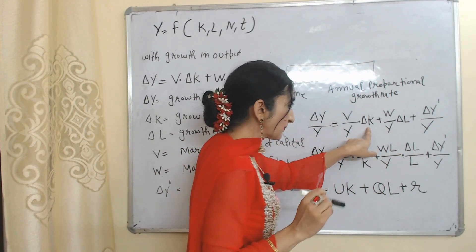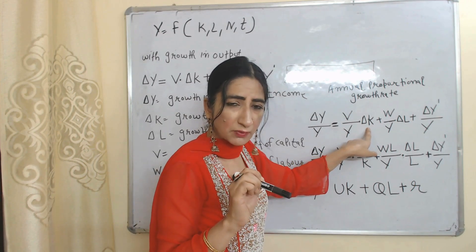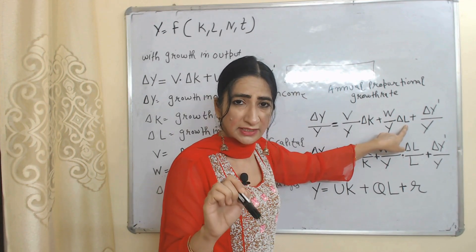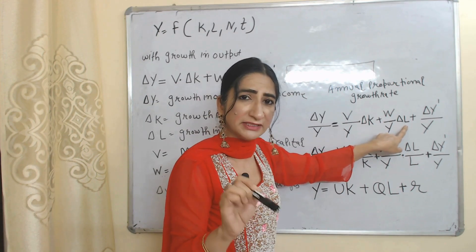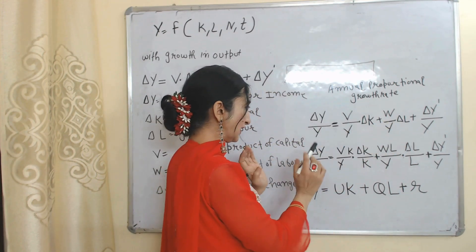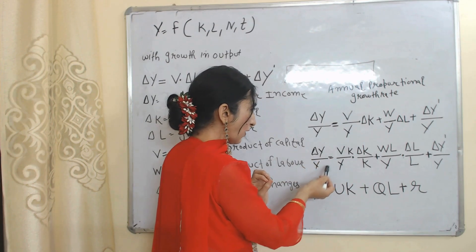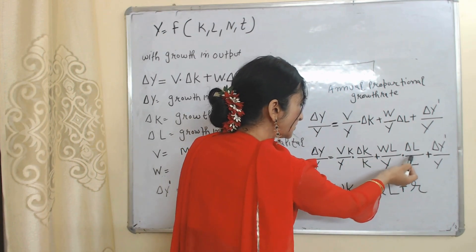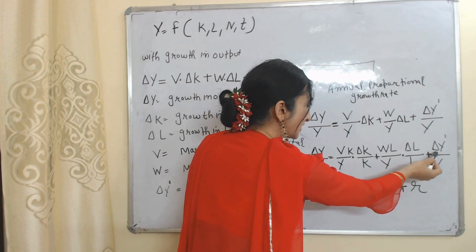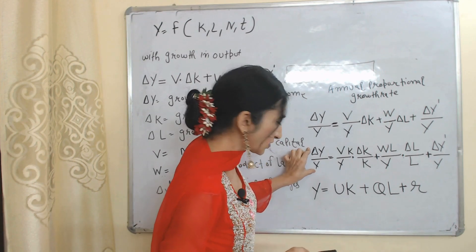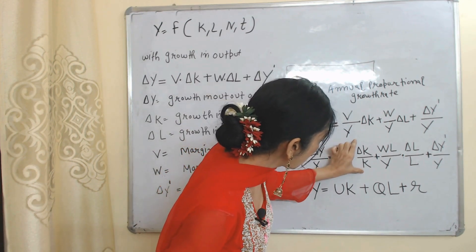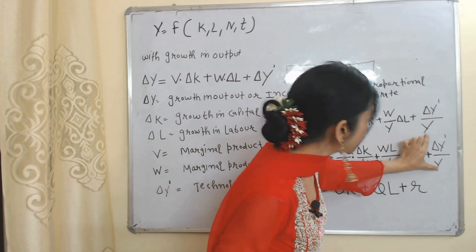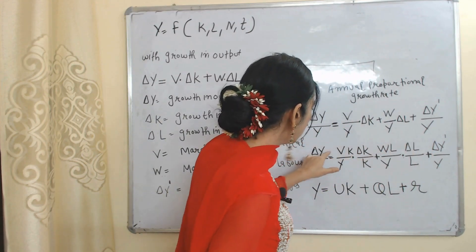To calculate the proportional growth rate in capital, we multiply and divide ΔK by K. Similarly, for labor, we multiply and divide ΔL by L. After doing this, our equation becomes: ΔY/Y = (VK/Y)·(ΔK/K) + (WL/Y)·(ΔL/L) + ΔY'/Y. This gives us proportional growth rates in national income, capital, labor, and technology.